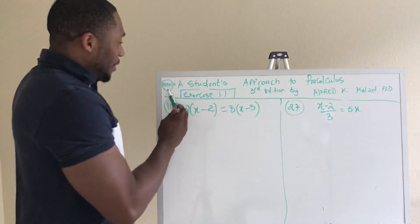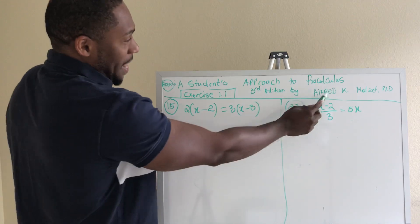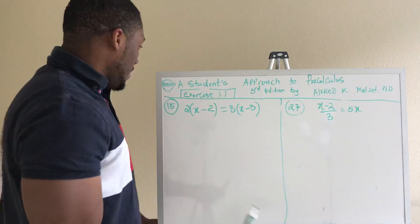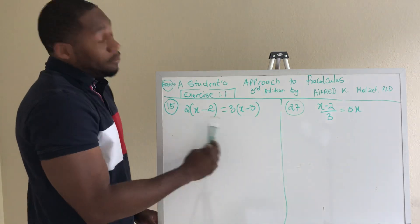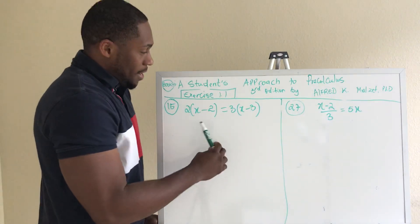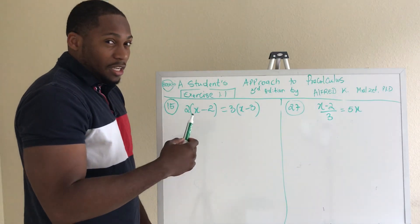All right, we're still using the same book, A Student's Approach to Precalculus, third edition by Alfred K. Molson, Ph.D. We're still doing equations solving for X. We have two of them here we're going to solve, and then next time we're going to move to inequality.